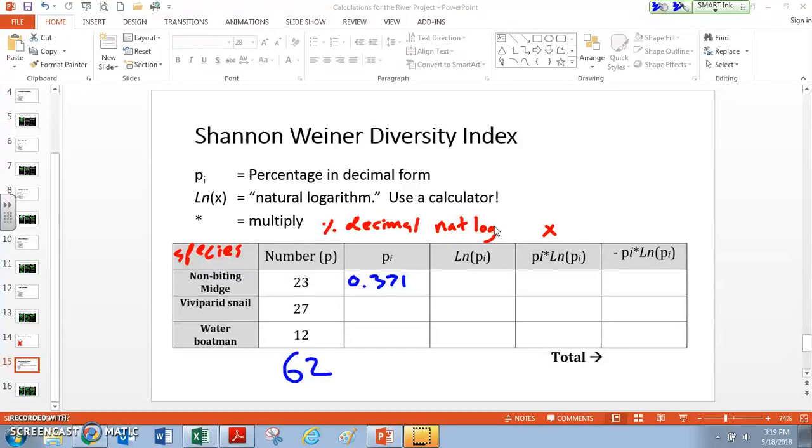And we can do that for the other ones. 27 divided by 62 is going to give us 0.435. And finally, 12 divided by 62 is going to give us 0.194. So this is the first step in the Shannon-Weiner Diversity Index, is just to calculate what are the percent decimals of each of these.